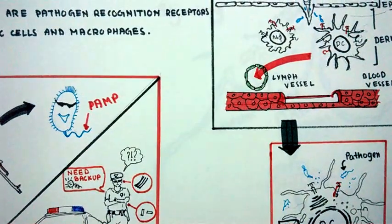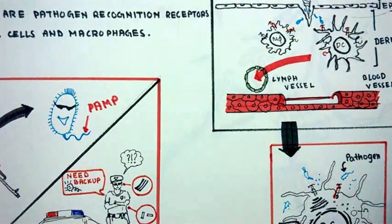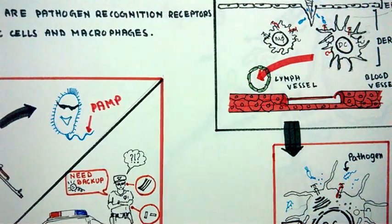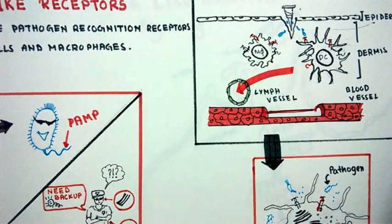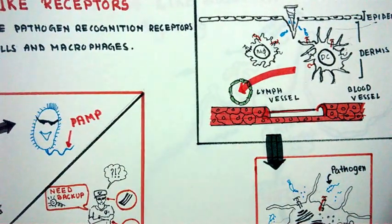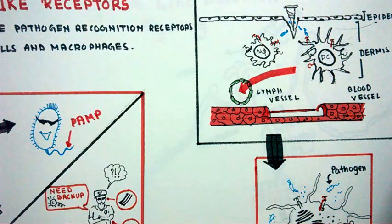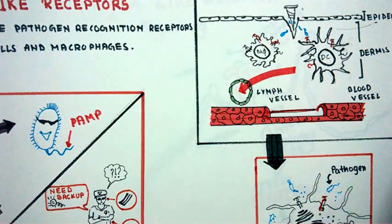Similarly, dendritic cells are like patrolling police officers. They go towards the army camp, which is actually the lymph node, where T cells and B cells reside. The dendritic cell activates or tells the T cells and B cells about the pathogen invasion. Then T cells and B cells reach the spot of invasion and fight the pathogen.